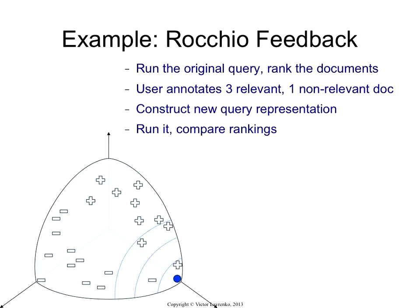So this means you're looking at the angle between each one of these documents and the query itself. The pluses mark the documents that are relevant — it's a two-way example — and the minuses mark the documents that are non-relevant. So the initial ranking is not particularly great; as you go down the ranks, you will get a mixture of relevant and non-relevant examples.